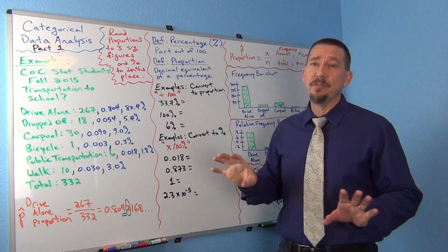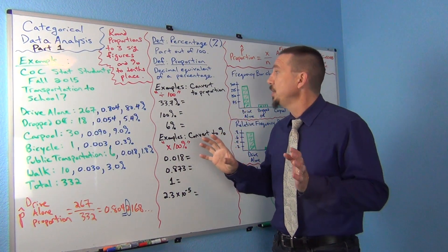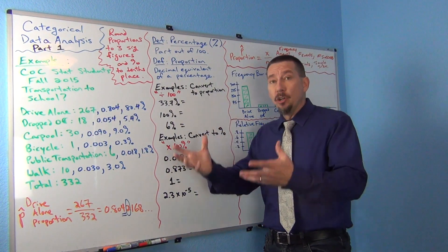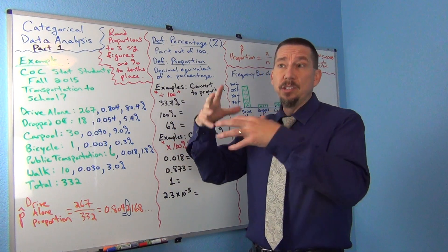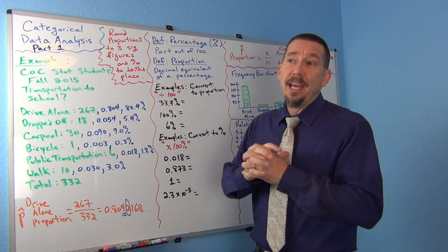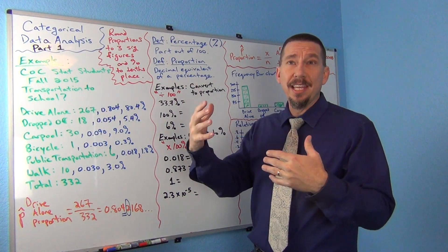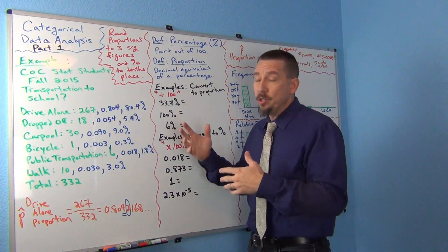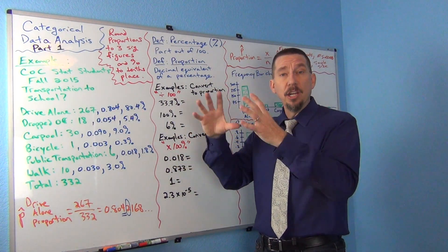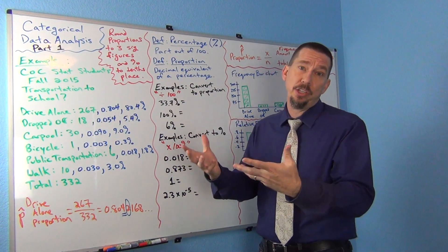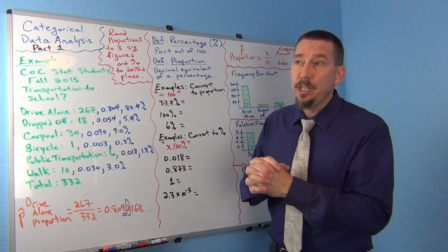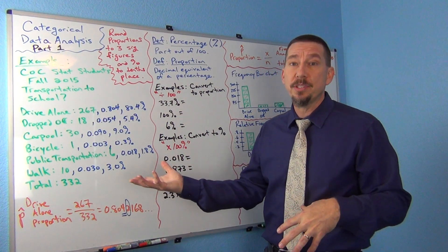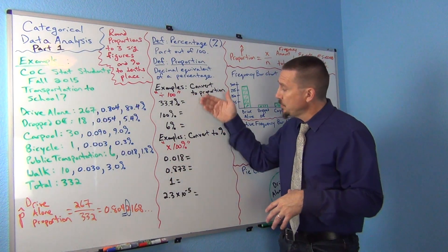One of the first things you should be comfortable with is converting proportions into percentages and percentages back into proportions. A lot of times when we read an article and it gives us a percentage, and then we want to do some more advanced analysis, we have to convert the percentage back into a proportion before putting it into the computer. Or if the computer does some kind of analysis, it will often calculate the proportions for each categorical variable in decimal form, but then when you want to explain that to someone, you might want to turn it back into a percentage.